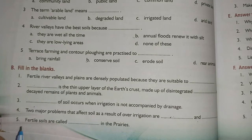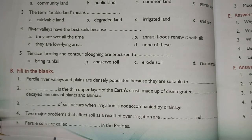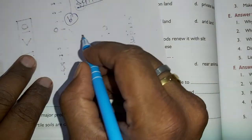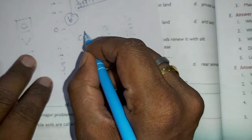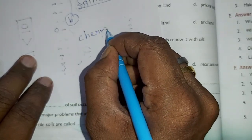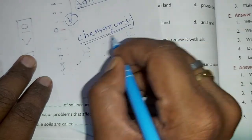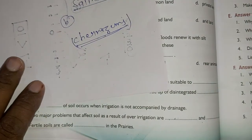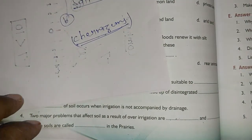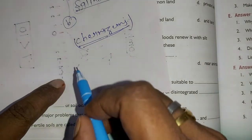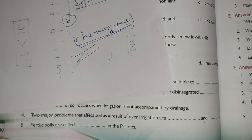The fifth fill in the blank: fertile soils are called dash in the prairies. What is the answer? The answer is chernozems. In the prairies of the USA and Canada, these fertile soils are called chernozems.